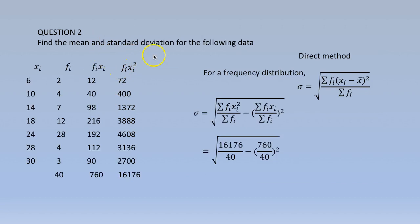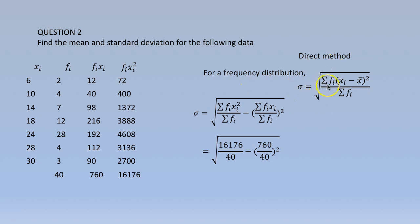Question 2: find the mean and standard deviation for the following data. We are given xi and fi — this is a frequency distribution. Using the direct method, sigma equals the square root of summation fi(xi minus x-bar) squared divided by summation fi. Simplifying, this becomes the square root of summation fi·xi squared by summation fi minus (summation fi·xi by summation fi) squared.